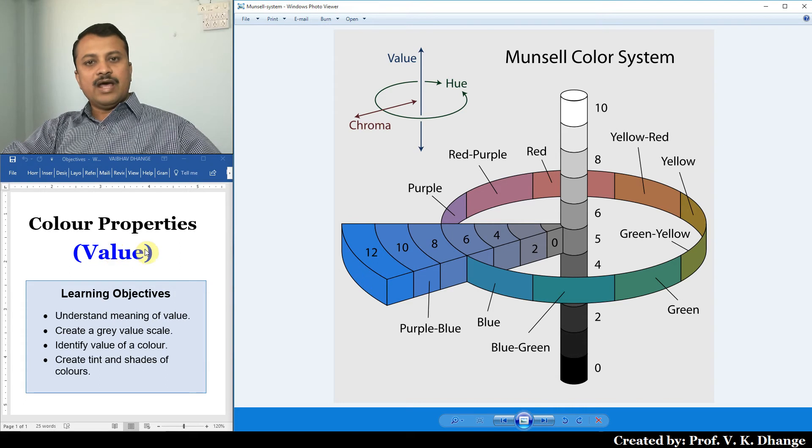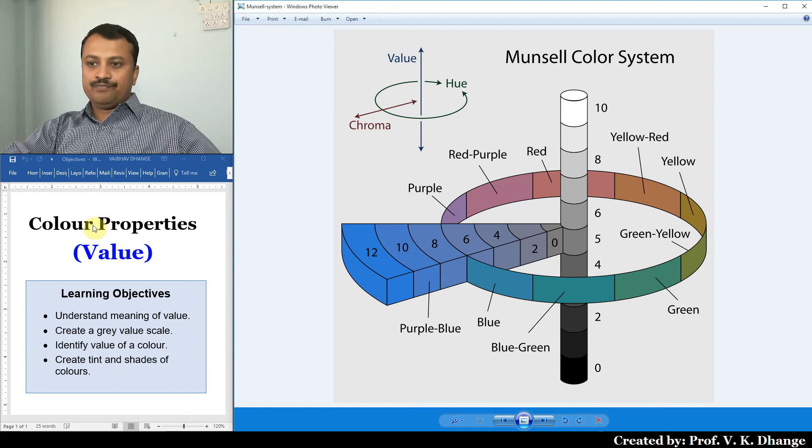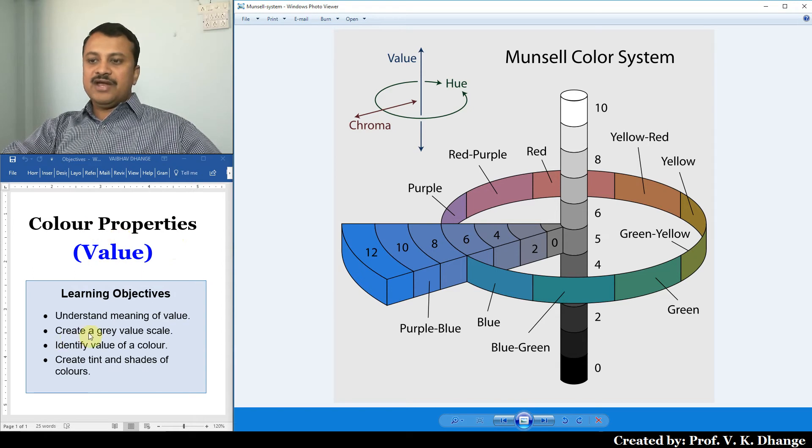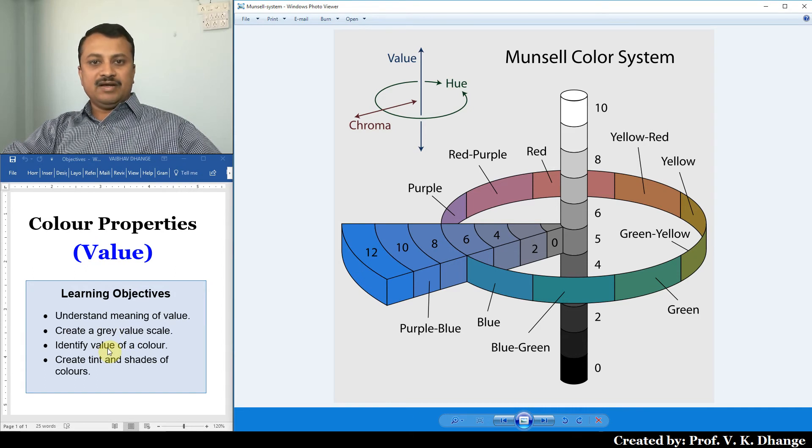In this video, we are going to study the second most important property of color, that is value. We will try to study exactly what does it mean by value. We will create a gray value scale. We will identify value of chromatic colors, and then we will also create tint and shade strips of chromatic colors.